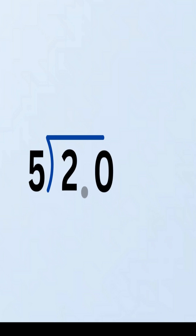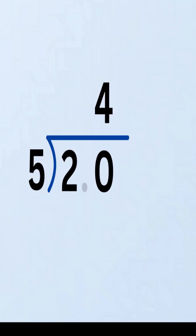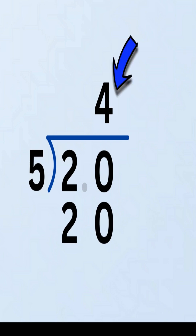Now if we ignore the decimal for a second, 2.0 becomes 20. Let's ask again: how many times does 5 go into 20? That's easy — 4 times, because 5 times 4 equals 20. Perfect. So we write 4 in the quotient right after the decimal point.